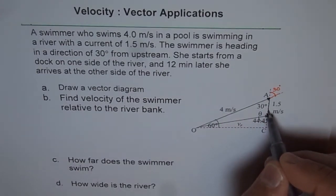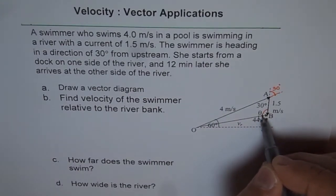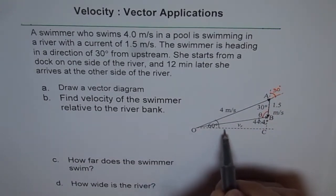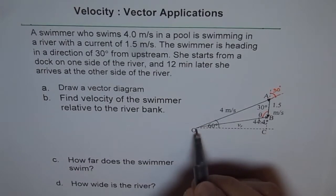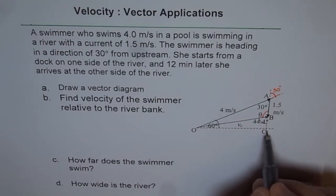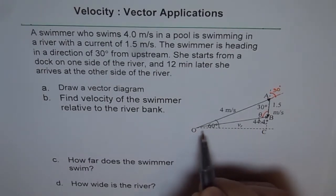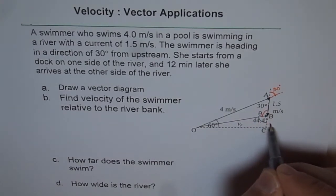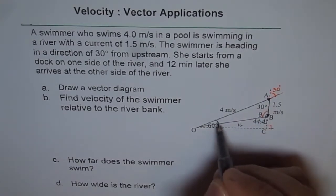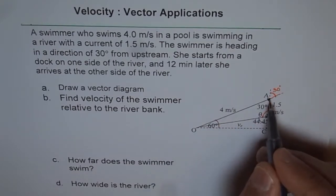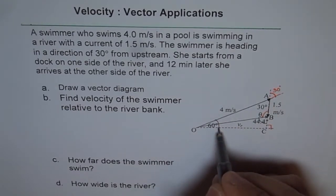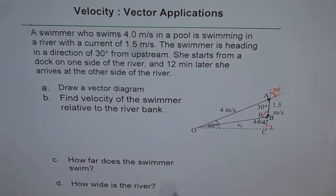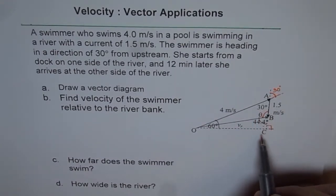Let this angle be theta. We connect this to the bank, so point C is directly across. If we consider this right triangle, the total angle AOC will be 60 degrees — this is 30, 90, 60. So we have this big triangle as well.